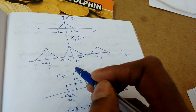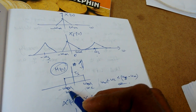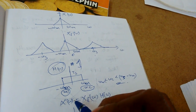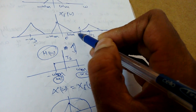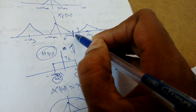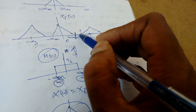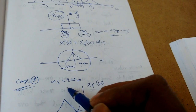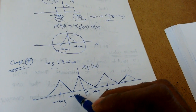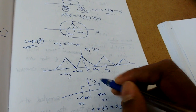We obtained X_delta(omega) as the shifting version of X(omega) at 0, omega_s, minus omega_s, and so on. Now if I multiply this with a low-pass filter H(omega) having cutoff frequency omega_c equal to omega_m, I recover only the original signal. If omega_c is at least equal to 2*omega_m — i.e., the sampling frequency is at least twice the bandwidth — the shifted copies do not overlap and we get a perfect, undistorted recovered signal.